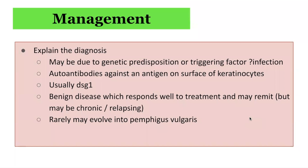In terms of management of Pemphigus foliaceus, the initial step is to explain the diagnosis. Pemphigus foliaceus may be due to genetic predisposition or a triggering factor such as infection or drugs, and involves the production of autoantibodies against Desmoglein 1 on the keratinocyte surface. Overall, it is a benign disease which responds well to treatment; however, it may remit and relapse, and in rare instances may evolve into Pemphigus vulgaris.